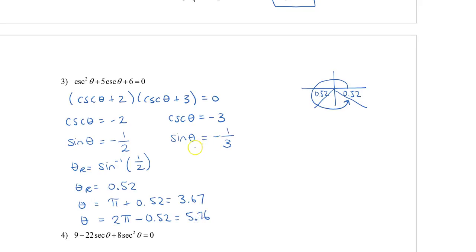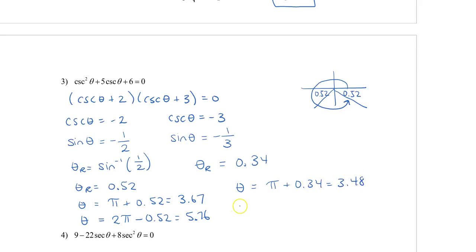For the second equation, sinθ = −1/3. The reference angle is 0.34. Since sine is still negative, it's still in the 3rd and 4th quadrants. So θ = π + 0.34 = 3.48 and θ = 2π − 0.34 = 5.94. So again, I have four solutions in total — two from the first factor and two from the second factor.